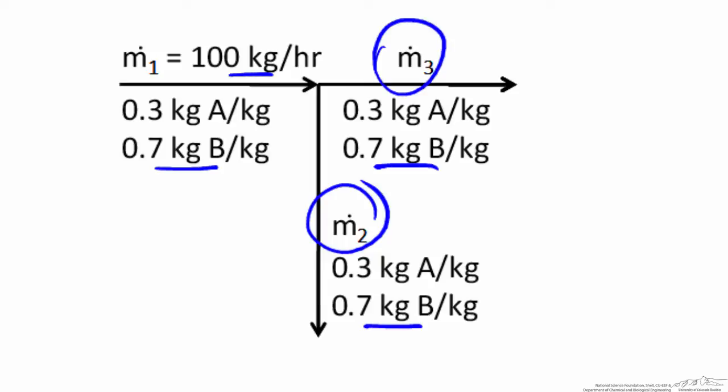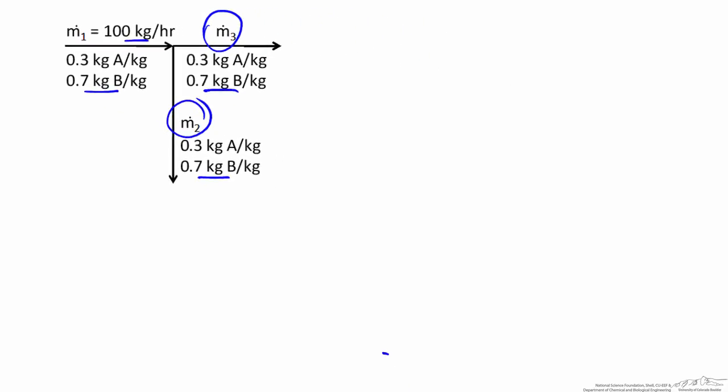Now if we did a degrees of freedom analysis on this system as we're used to doing it, it would suggest that we can calculate M2 and M3. We can calculate the degrees of freedom by taking the number of unknowns that we have and subtracting the number of independent balances that we can write.